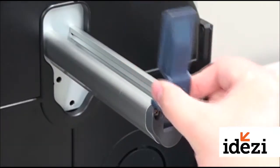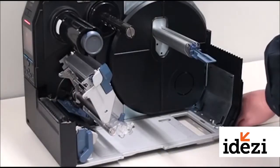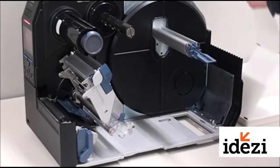Slide the media hub guide to the end of the post and fold it down. Place the fan fold media stock at the back of the printer.